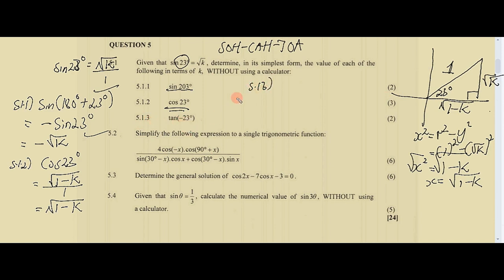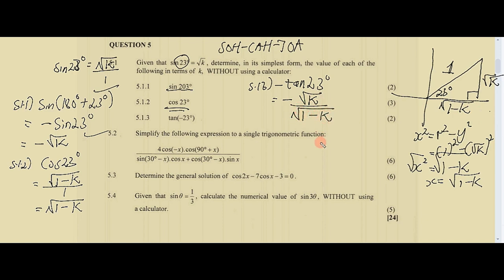For 5.1.3, tan(−23°): cosine of a negative angle means negative tan 23°. Tangent is opposite over adjacent, so we have negative √k over √(1−k). Just like that you have your two marks and you've completed the seven marks for this section.